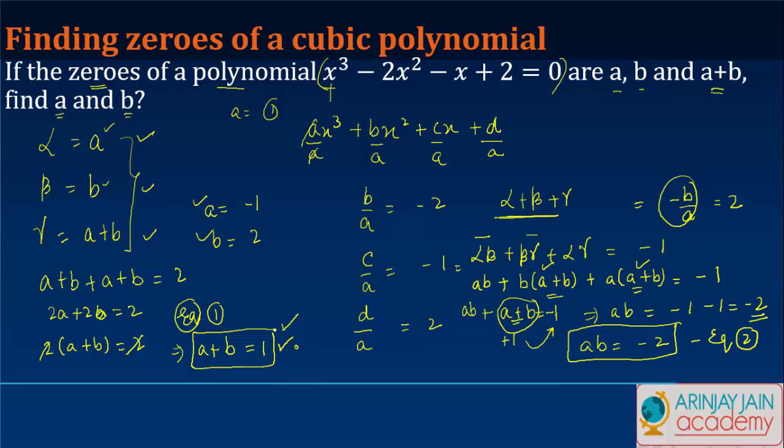And what are the zeros? The zeros are a, b and a+b. a you've got, b you've got, a+b will be equal to how much? -1 + 2 which is 1. And those are your answers.